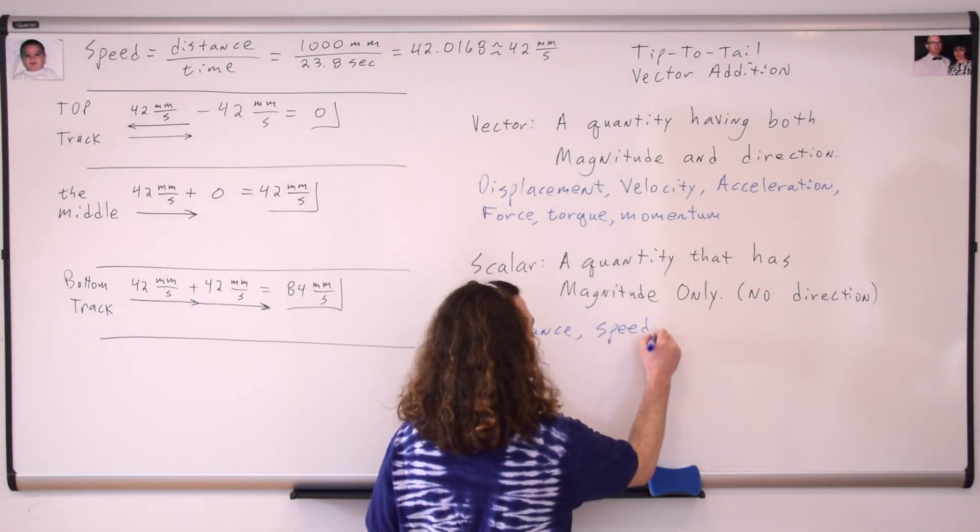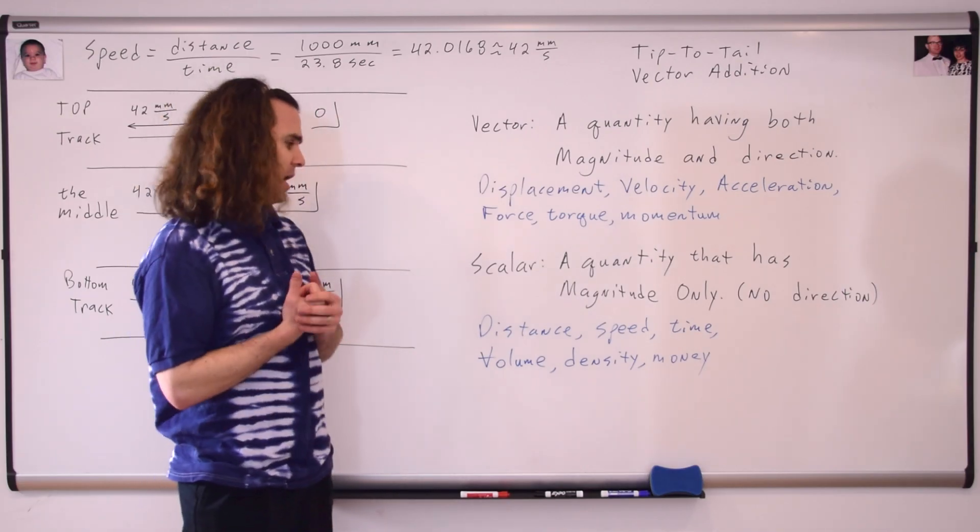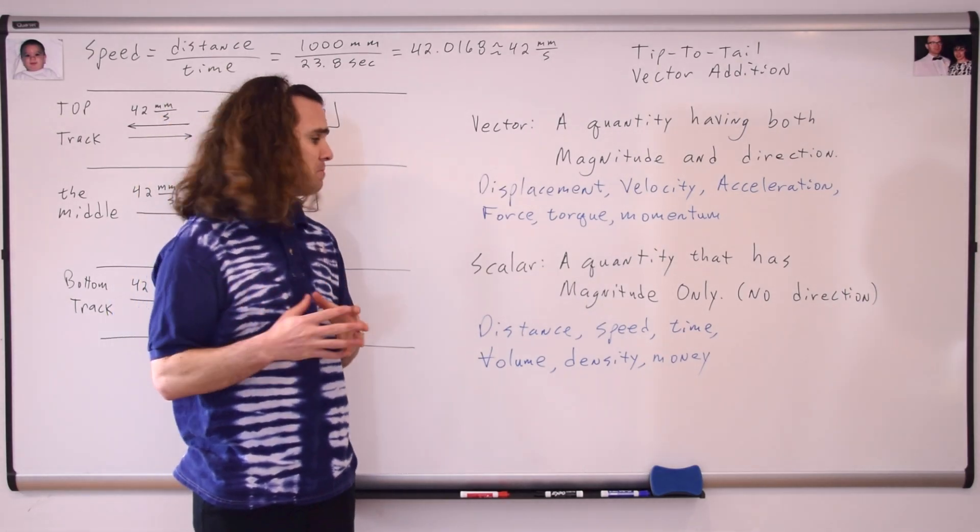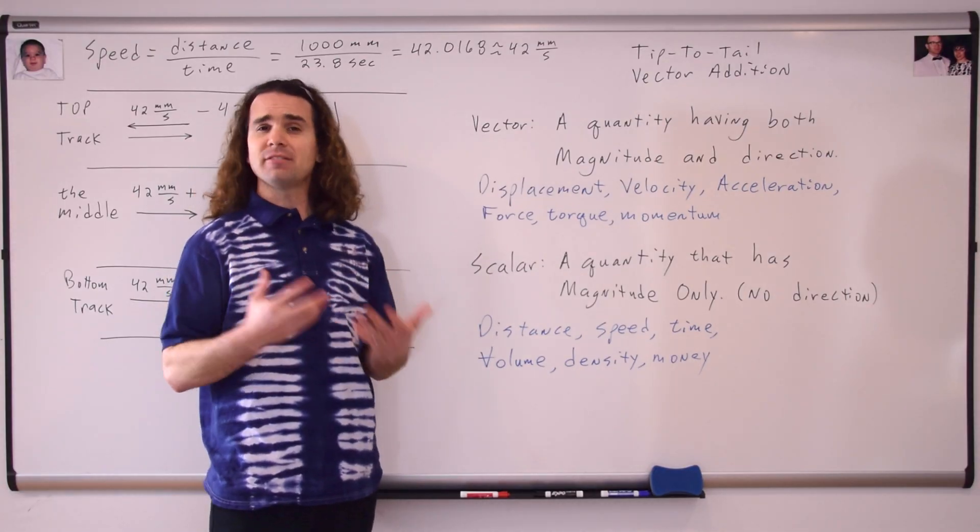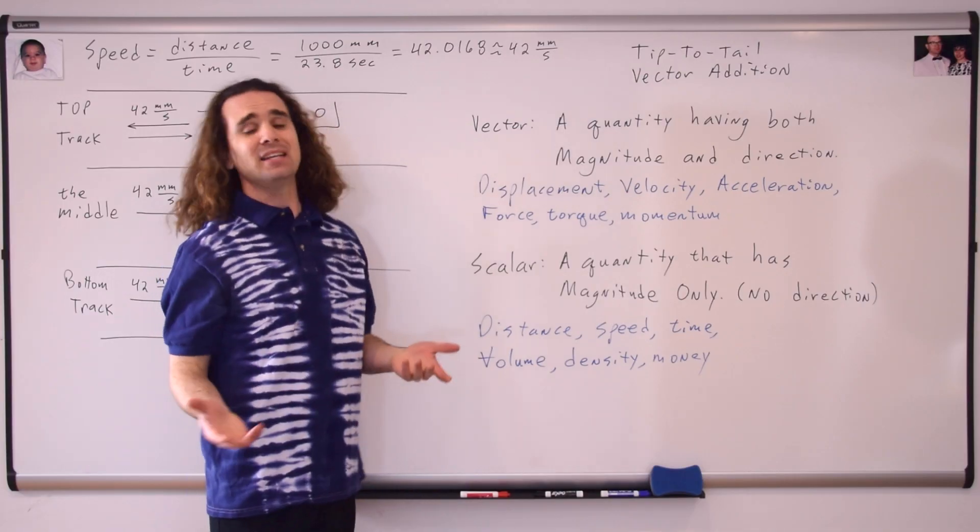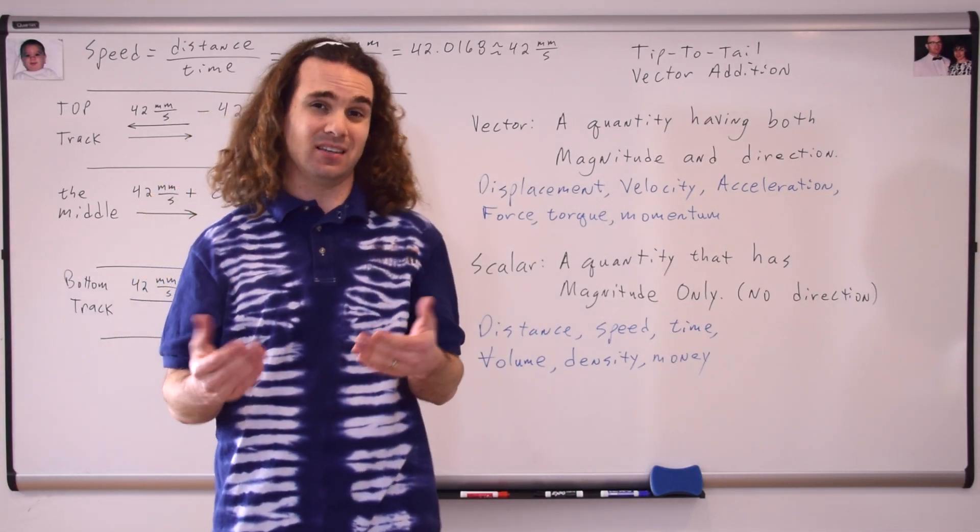Distance. Speed. Time. Volume. Density. And money. Money? Yeah, distance, speed, time, volume, density, and money. Those are all scalars. As far as money, think of it this way. Does five dollars east make any sense? No. Then money is a scalar. Basically, anything where adding direction doesn't make sense is a scalar.